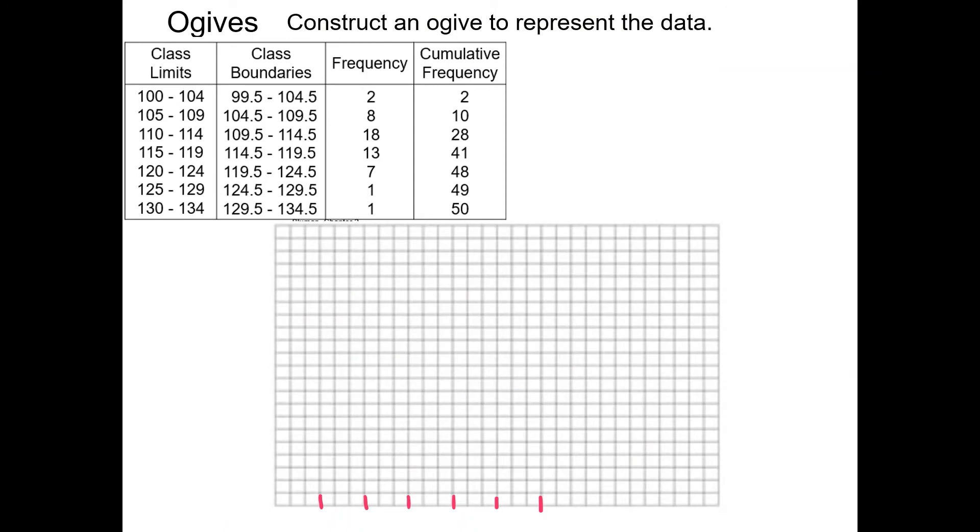So let's try an example for ogives. Remember, ogives use - we're using the same data set that we did last time. So it's those record high temps. Ogives are using the boundaries on the x-axis like histograms, and they use the cumulative frequency on the side. So we want to count up. So I'm going to go by threes again for my tick marks. And then I'm going to label them. So I start at the origin with the leftmost bound point, which would be 99.5. So if you look in your class boundaries, the leftmost point, or this starting value, starts at the origin, which is right there.